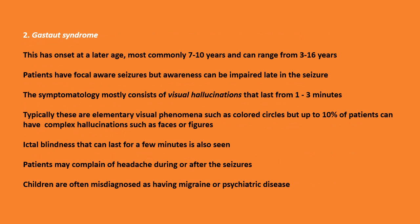Number two: Gastaut syndrome. This has onset at a later age, most commonly 7 to 10 years, ranging from 3 to 16 years. Patients have focal aware seizures, though awareness can be impaired late in the seizure. The symptomatology mostly consists of visual hallucinations lasting 1 to 3 minutes — typically elementary visual phenomena such as colored circles, though up to 10% of patients can have complex hallucinations such as faces or figures. Ictal blindness lasting a few minutes is also seen, and patients may complain of headache during or after seizures. Children are often misdiagnosed as having migraine or psychiatric disease.